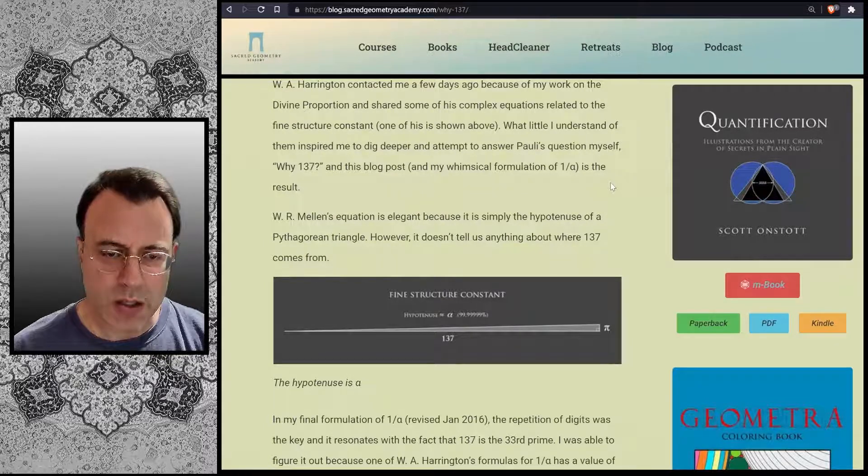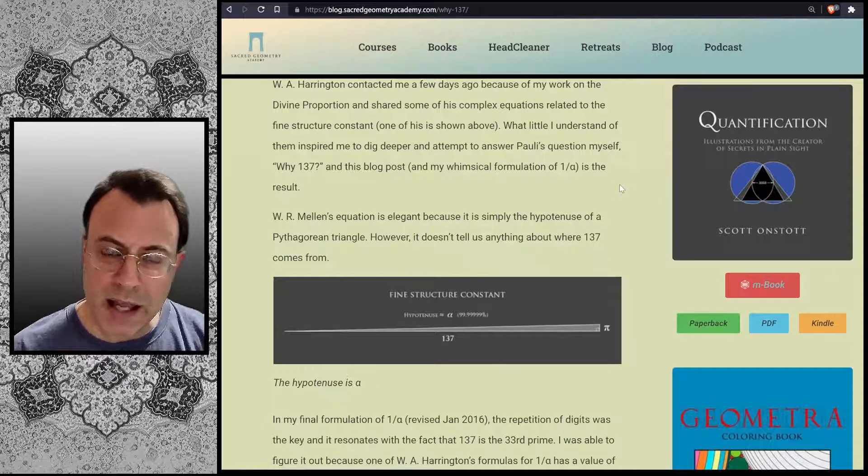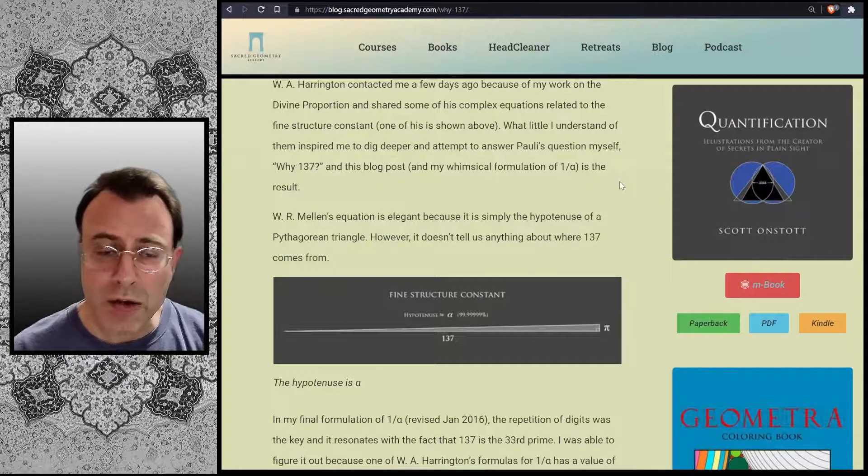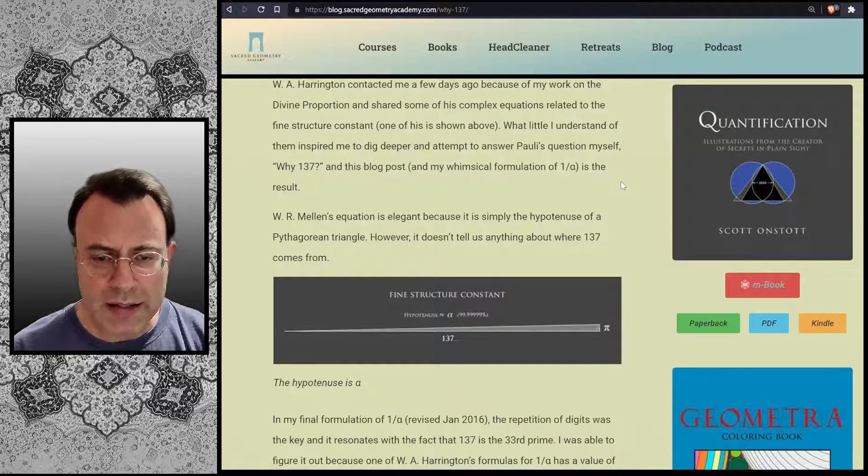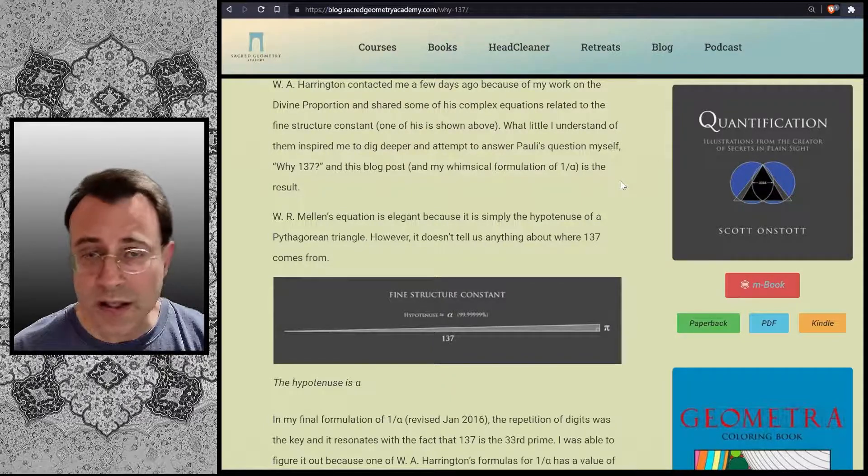W.R. Mellon's equation is elegant because it is simply the hypotenuse of a Pythagorean triangle. However, it doesn't tell us anything about where 137 comes from.